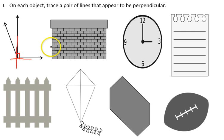In the brick wall or chimney, whatever this is, I can look at the corners as being made from perpendicular lines. On my clock, the hands would be considered perpendicular because they make that right angle.